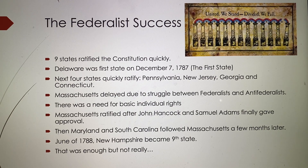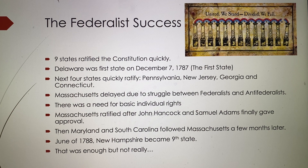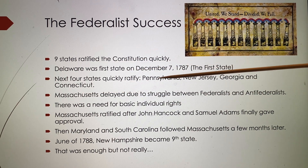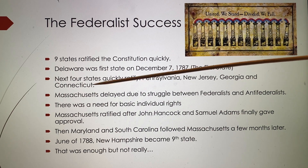Nine states ratified the Constitution quite quickly. Delaware was the first state — it's still called 'the First State' — ratifying on December 7th, 1787. The next four states quickly followed: Pennsylvania, New Jersey, Georgia, and Connecticut — the state behind the Connecticut Compromise. Then came Massachusetts, where there was a struggle between Federalists and Anti-Federalists, including Samuel Adams.